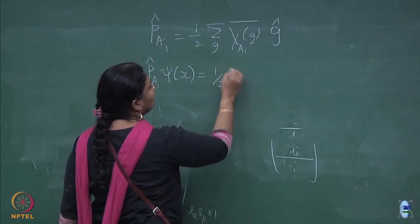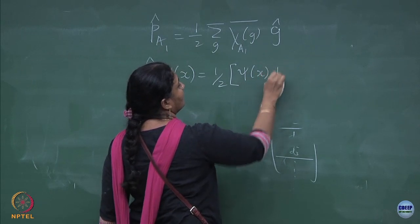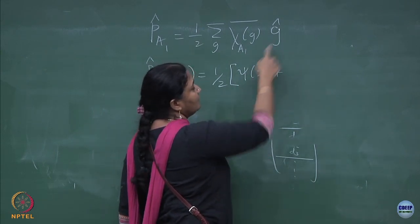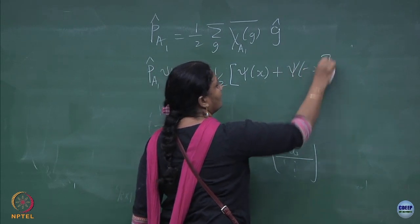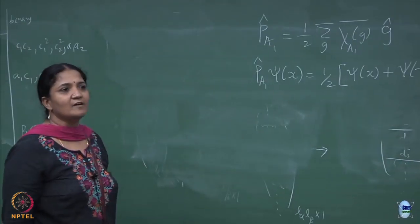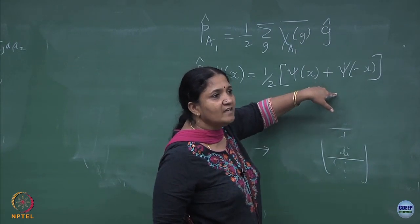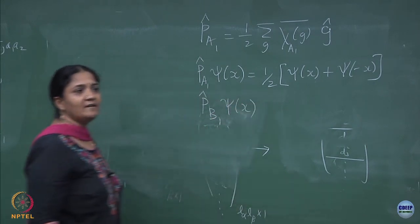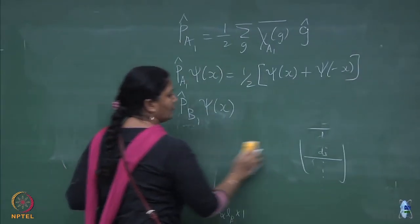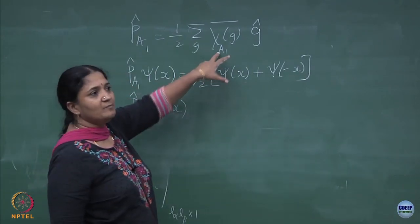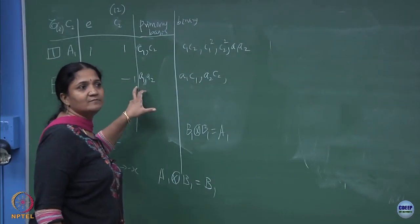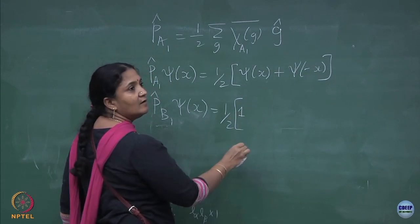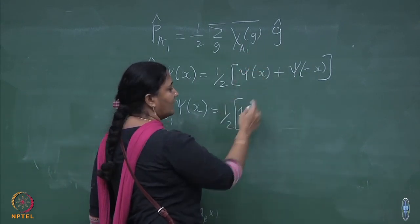If you do this, you see that it will give you the plus sign for the C2 operation; this one anyway is plus 1, the identity operator. So this will be your projection operator — for any wave function it will project you to a subspace which is an even function.